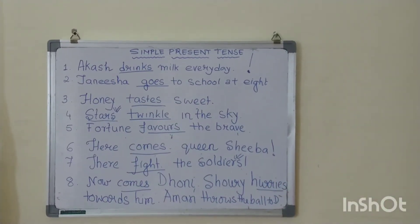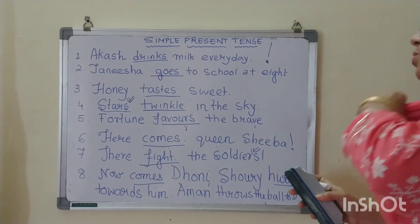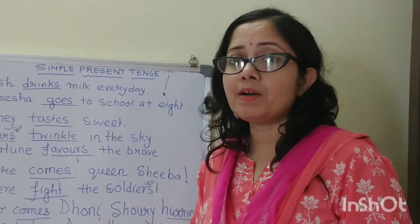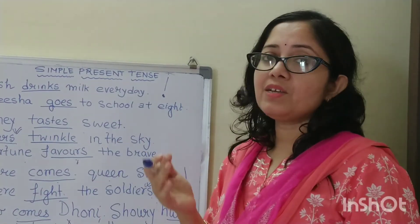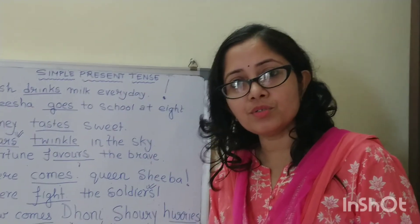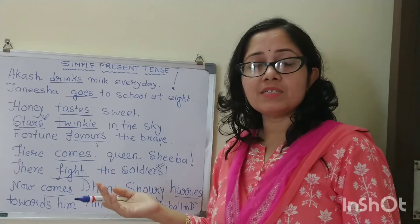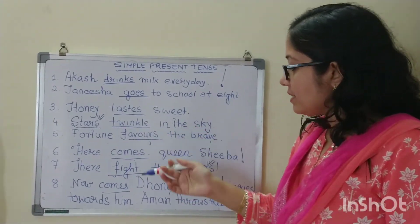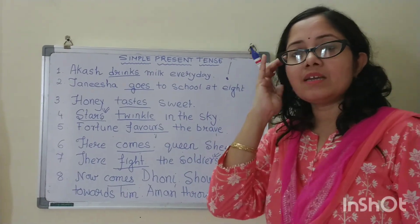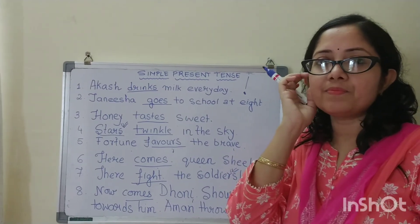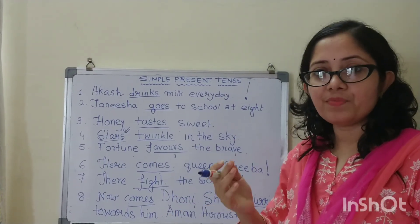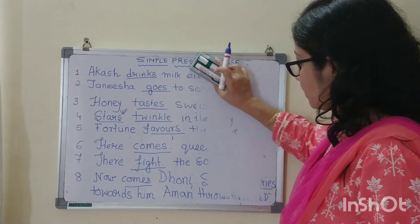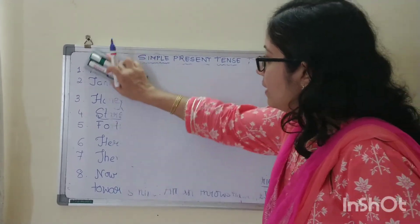Alright, I hope it is clear to you all. So I use simple present tense for a daily habit, whenever I am talking about my daily routine. I use it for universal truth. I use it for exclamatory sentences starting with here and there. And I also use it when I am saying something in vivid narrative — like a story.